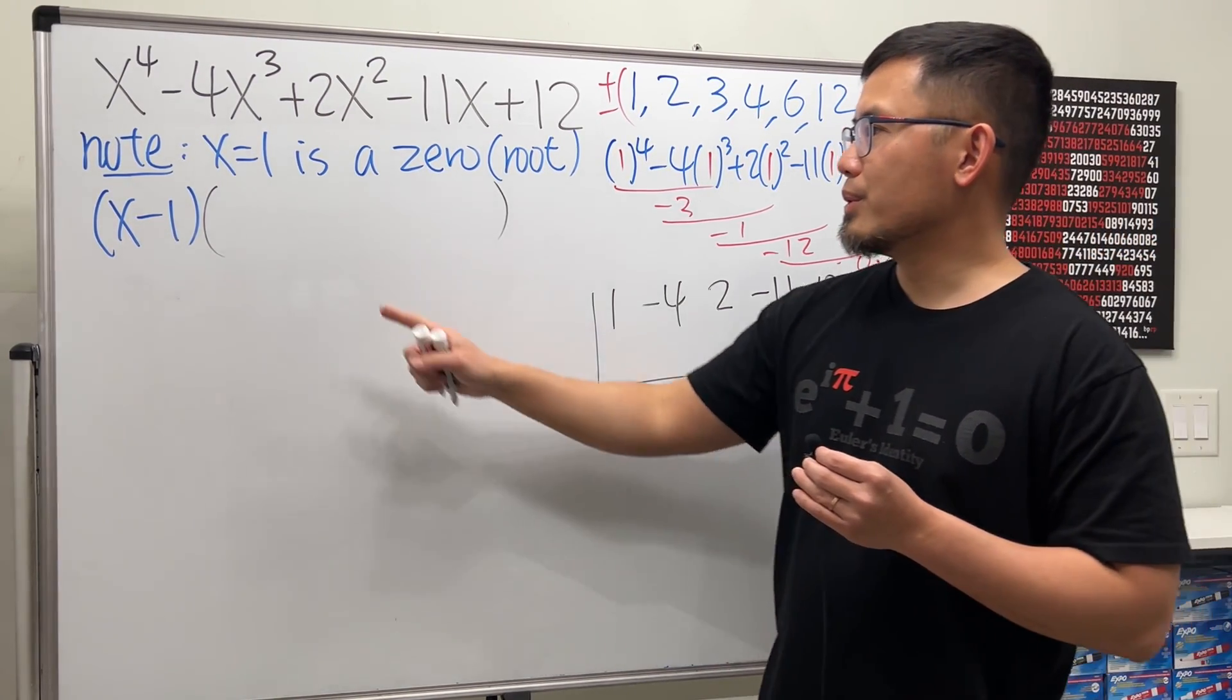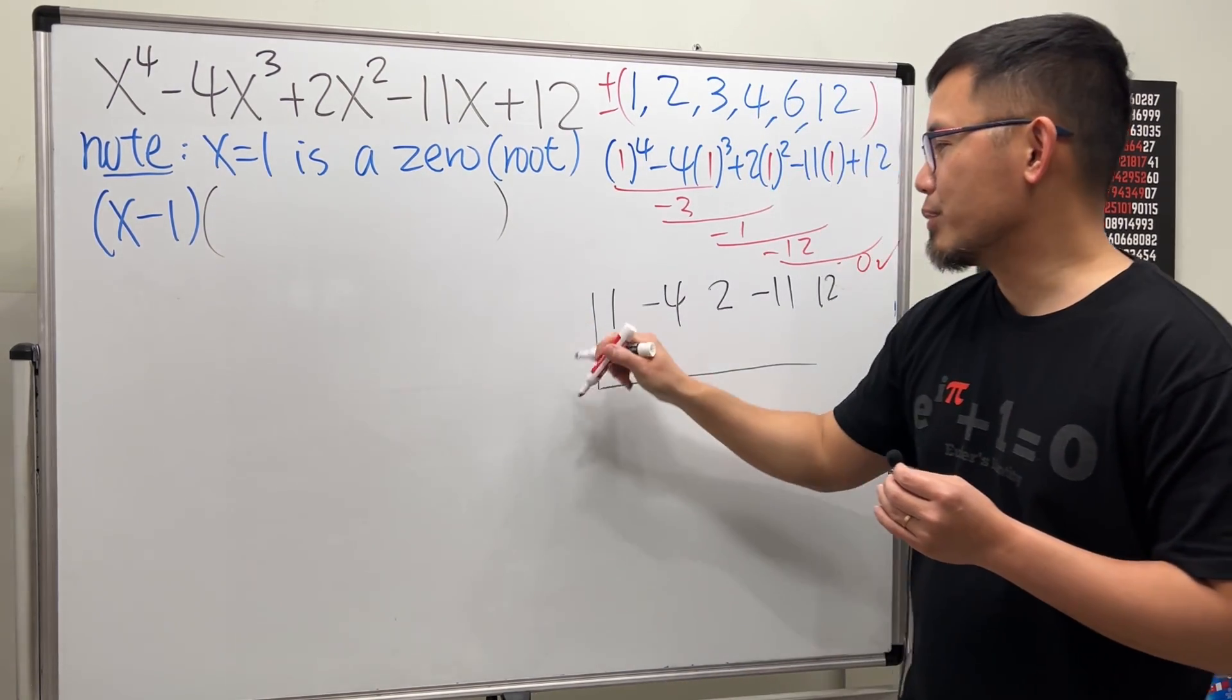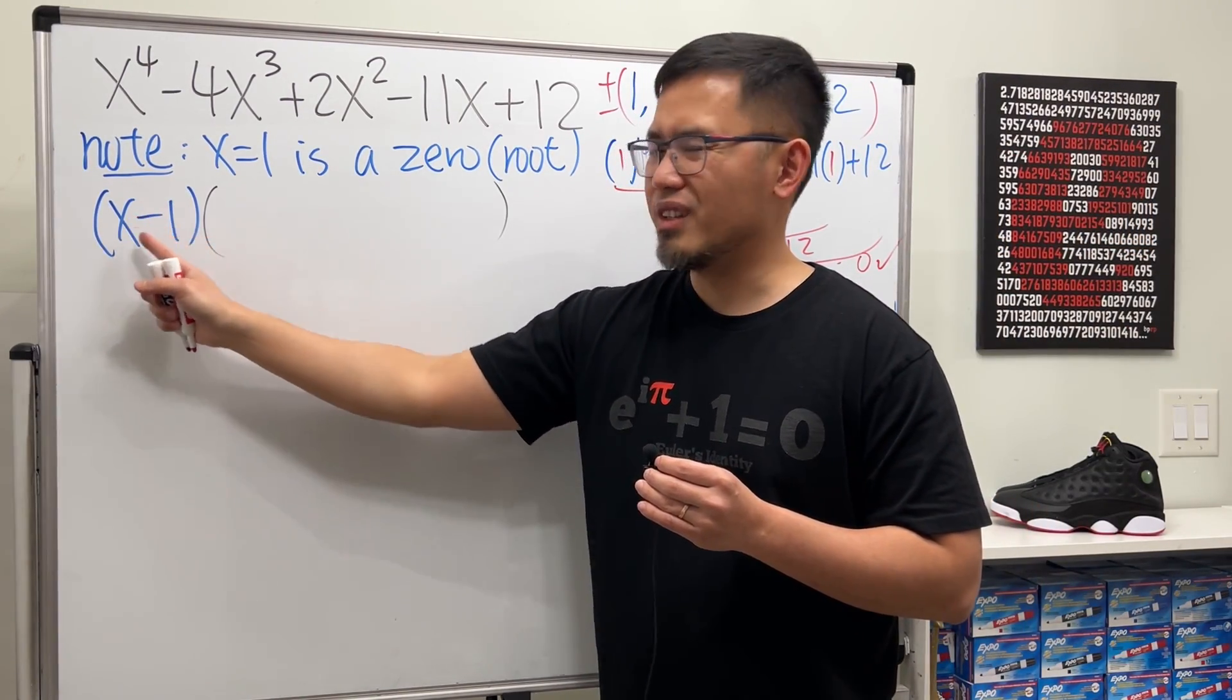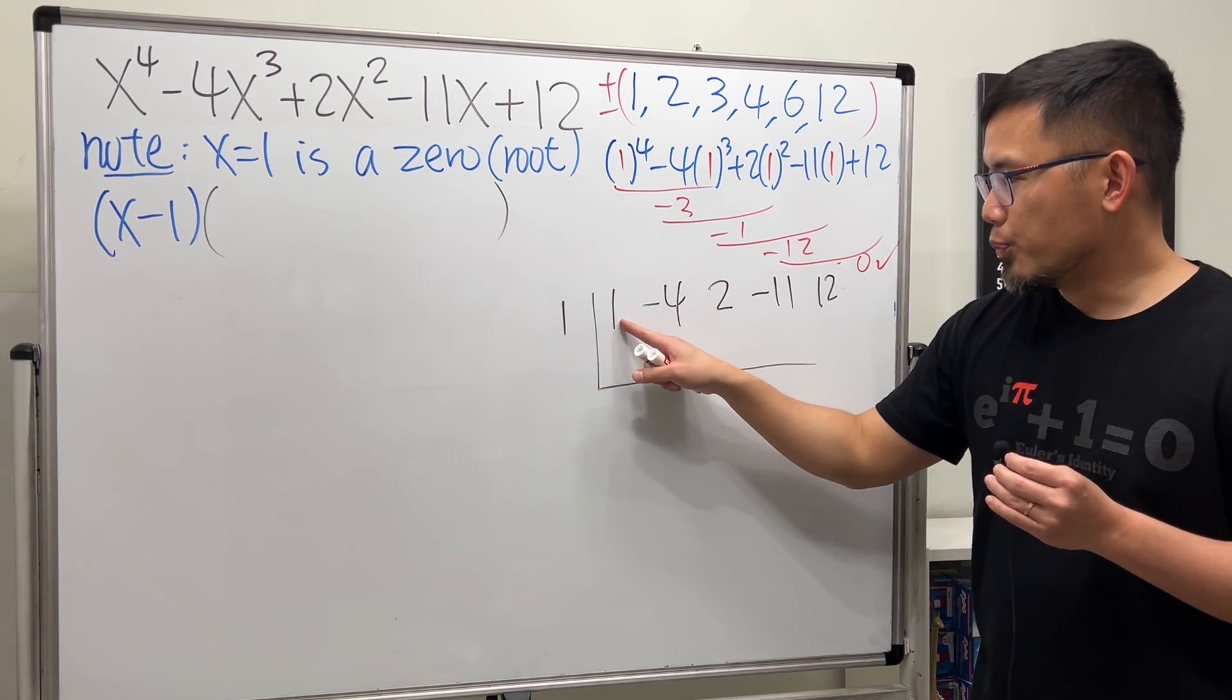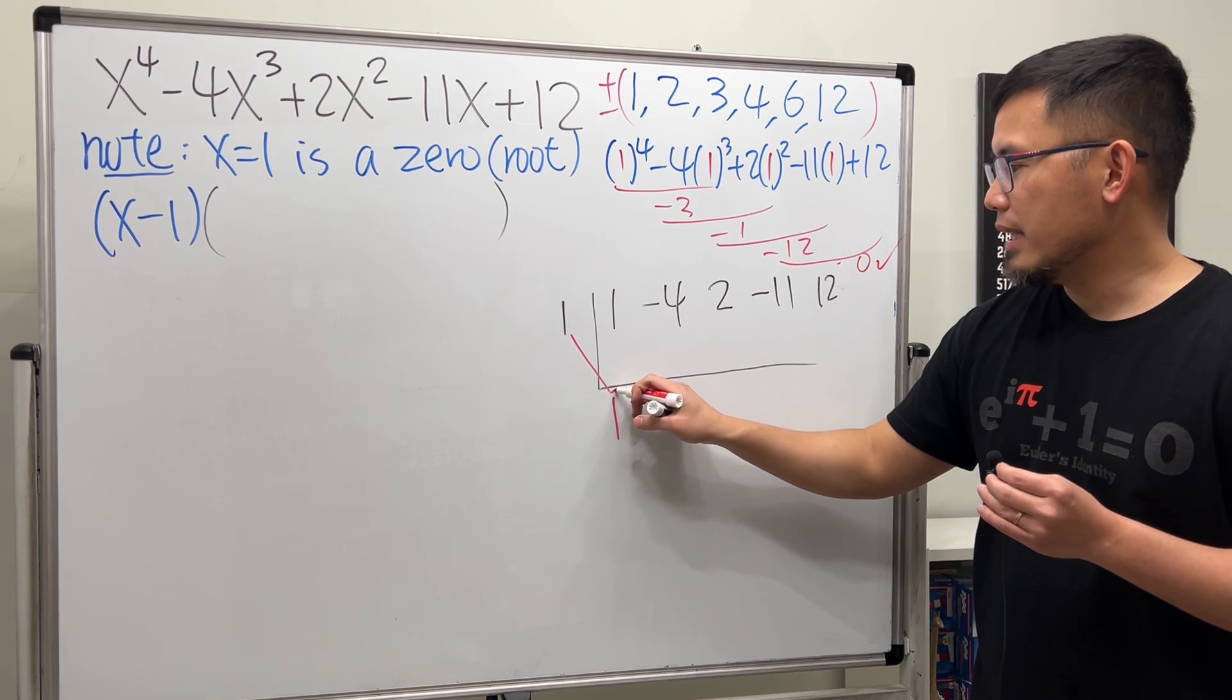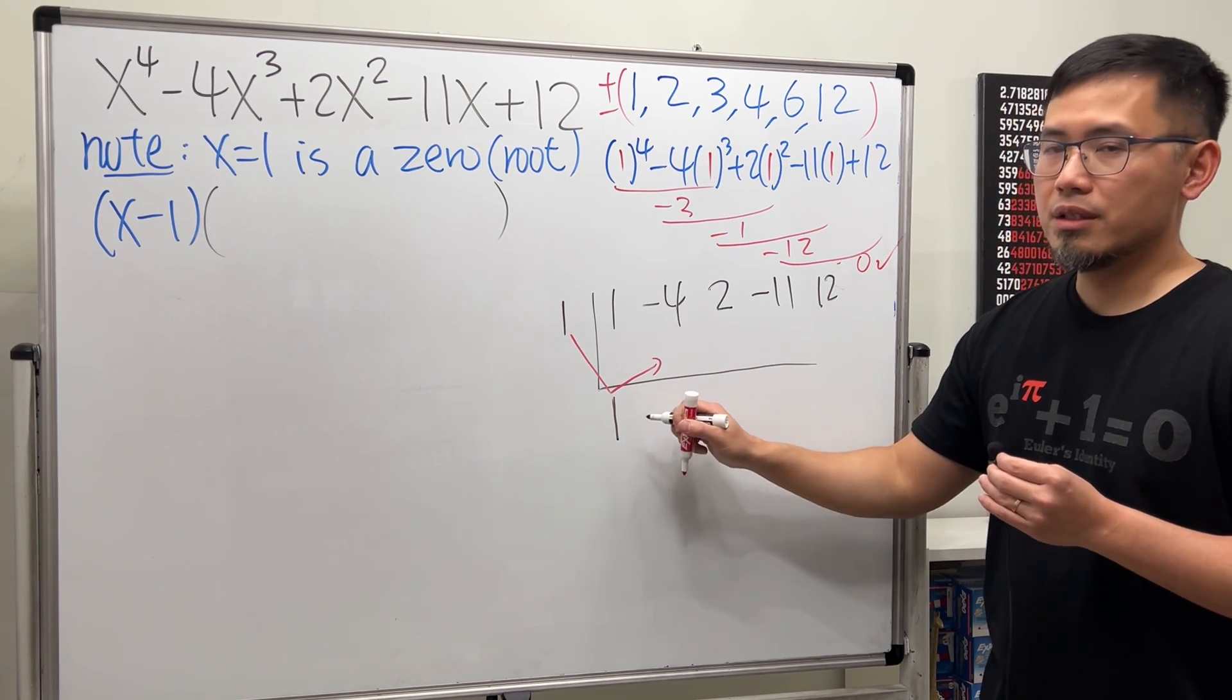We have 1 and then negative 4, 2, and then negative 11, and the last one 12. Then we are going to see that right here x equals 1 is a zero. Go ahead and put that 1 right here. Sometimes if you are looking at this, just make sure that you do the opposite of negative 1. And here we go. First you bring down the 1 right here.